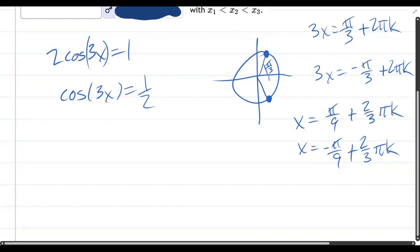We're going to let k equals negative 1. This one's already negative, so if k is negative 1, that becomes even more negative, so k equals negative 1 won't work there. If k is negative 1 here, this term will be minus 2 thirds pi. Add negative 2 thirds pi to pi over 9, you'll have a negative value. So k equals negative 1 won't work.